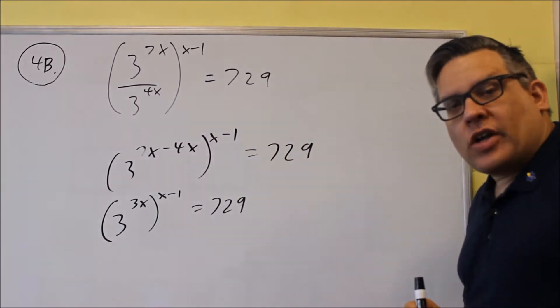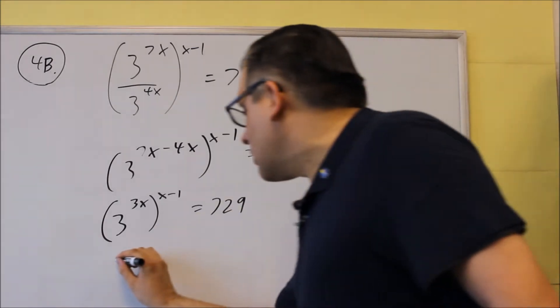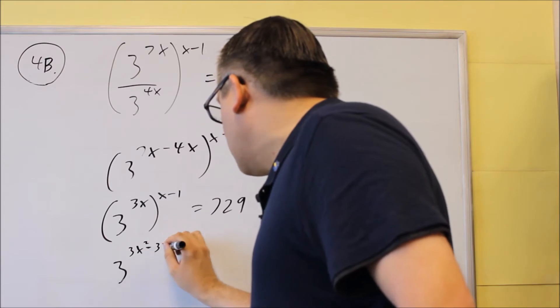You're raising a power to another power, so you're going to multiply the exponents in that case, and so you would get 3x squared minus 3x.